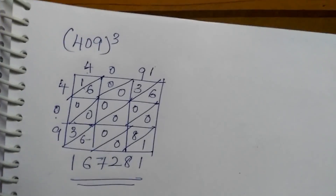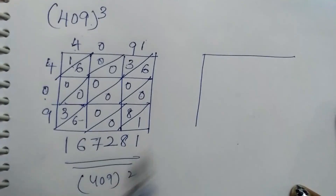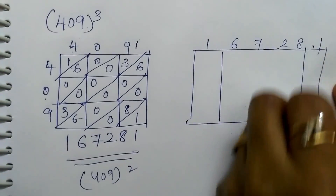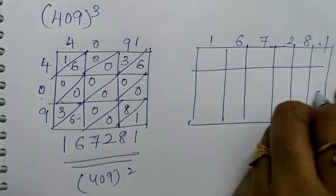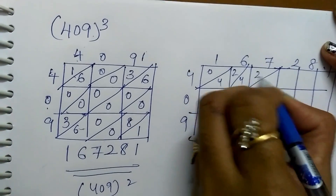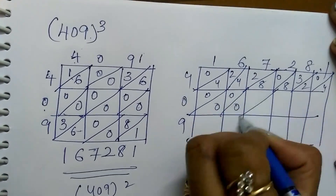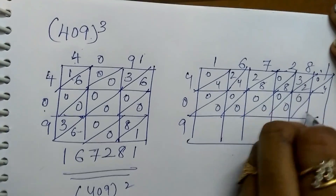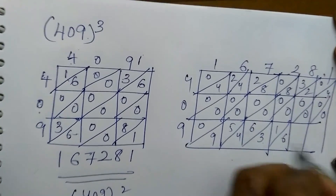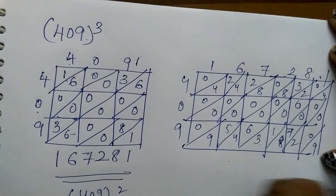This is the 409 whole square result. Again, take this value to cube it. Now multiply 167,281 × 409 using the box trick again. Working through the multiplications: 4×1=4, 4×6=24, 4×7=28, 4×2=8, 4×8=32, 4×1=4; 0×1=0, 0×6=0, 0×7=0, 0×2=0, 0×8=0, 0×1=0; 9×1=9, 9×6=54, 9×7=63, 9×2=18, 9×8=72, 9×1=9. Just add diagonally.